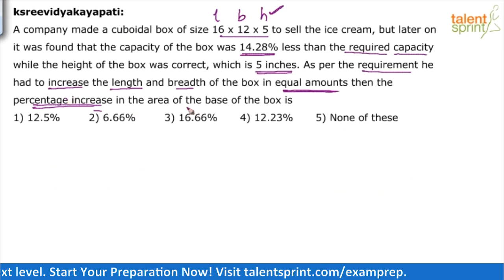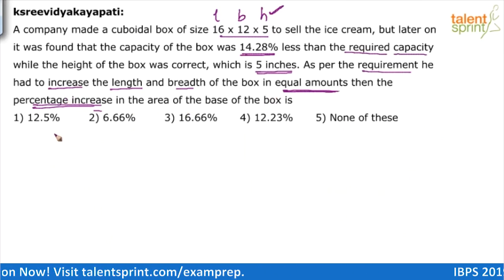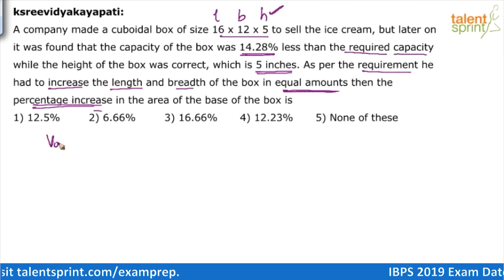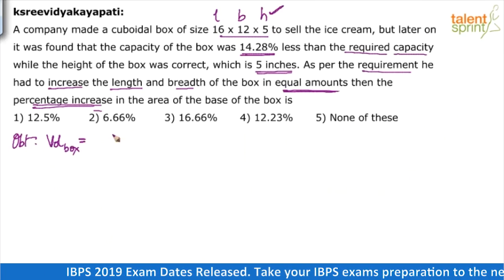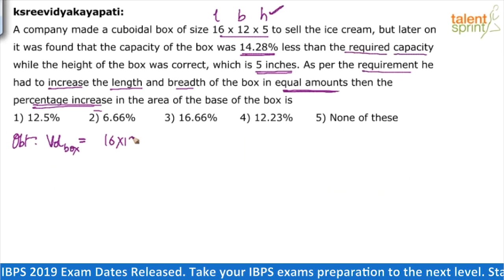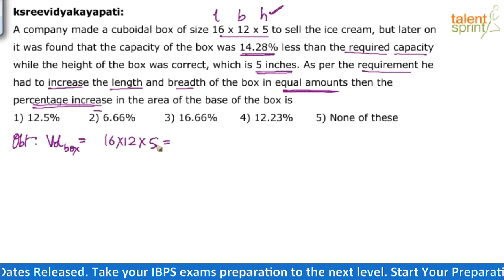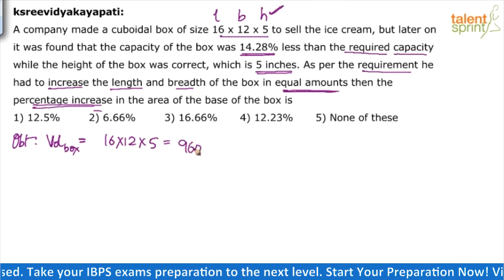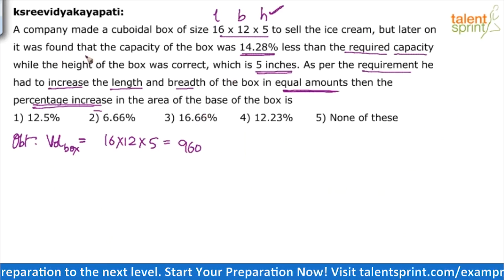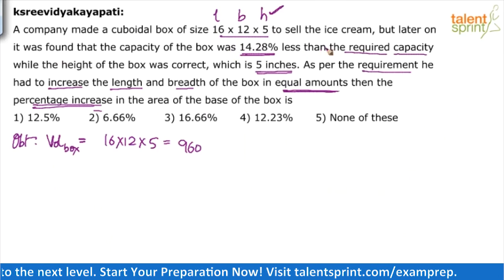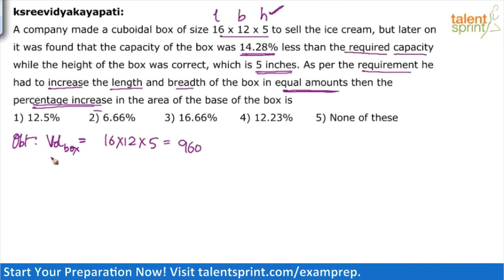Let's solve it. The obtained volume of the box is 16 × 12 × 5, which is 960 cubic inches. They found that the capacity of the box is 14.28% less than the required capacity — so this obtained volume of 960 is 14.28% less than the required capacity.